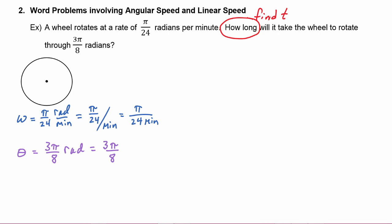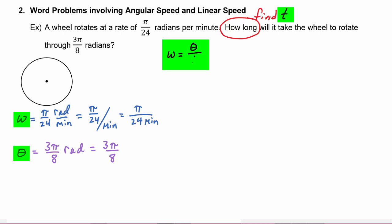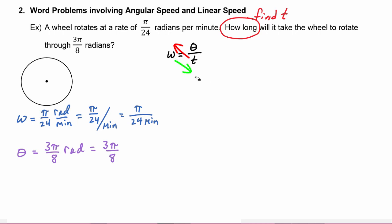We're looking for an equation to use to solve this problem. We have the variables ω, θ, and t involved, so we use the equation ω = θ/t. Since we're solving for t, we'll get t out of the denominator by cross-multiplying: t = θ/ω. Now we can plug in the values we have.